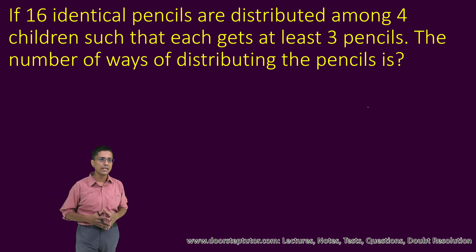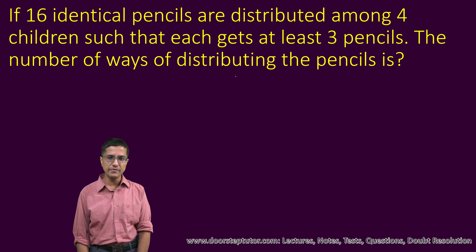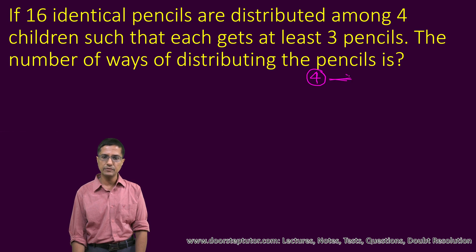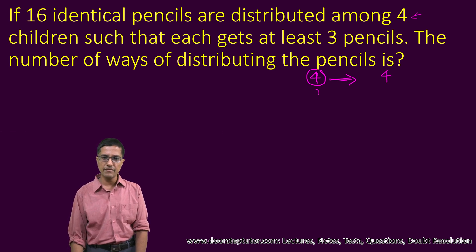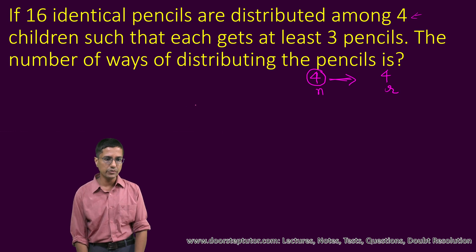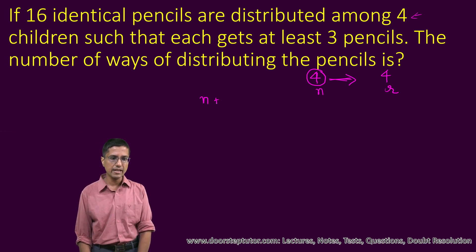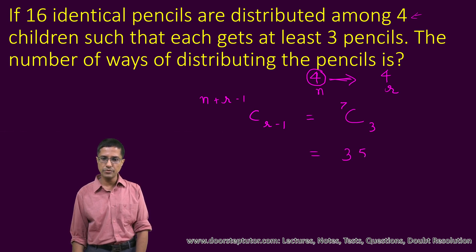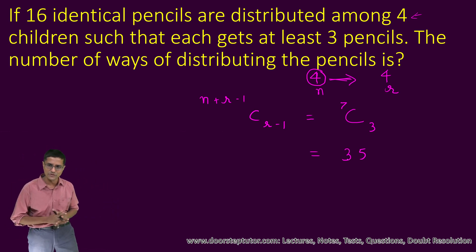Now let us use the same formula in our problem. We are left with four pencils after giving three pencils to each of the four children, and we have to divide these four pencils among the four children. So n equals 4 and r equals 4. Applying the formula: (4 + 4 - 1) C (4 - 1) = 7C3. If you compute 7C3, this comes out to be 35. Very simple, provided you understand this special case of dividing n identical things into r groups.